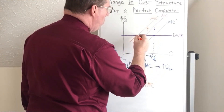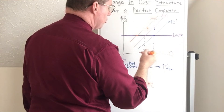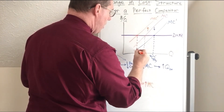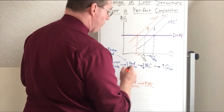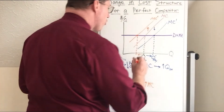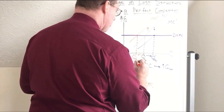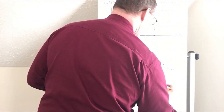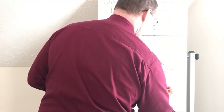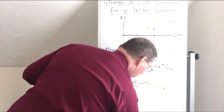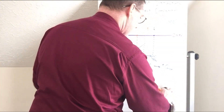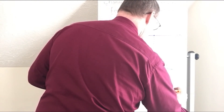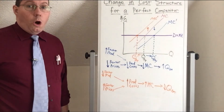As you can see, where marginal cost intersects marginal revenue is now to the left of the starting profit maximizing quantity. Therefore, an increase in marginal cost for a firm will result in a decrease in the profit maximizing quantity they will produce. When marginal costs go up, the profit maximizing quantity will go down.